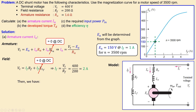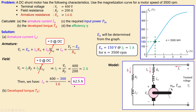Now we know this is the linear part of the magnetization curve. Since the field current is 2 amps — double the 1-amp example — and the curve is linear, the back EMF also doubles: from 150 V to 300 V. So the armature current is (400 − 300) / 1.6, which gives 62.5 amperes. Increasing the field current by a factor of 2 increases the back EMF by a factor of 2 in the linear region. That concludes the armature current.